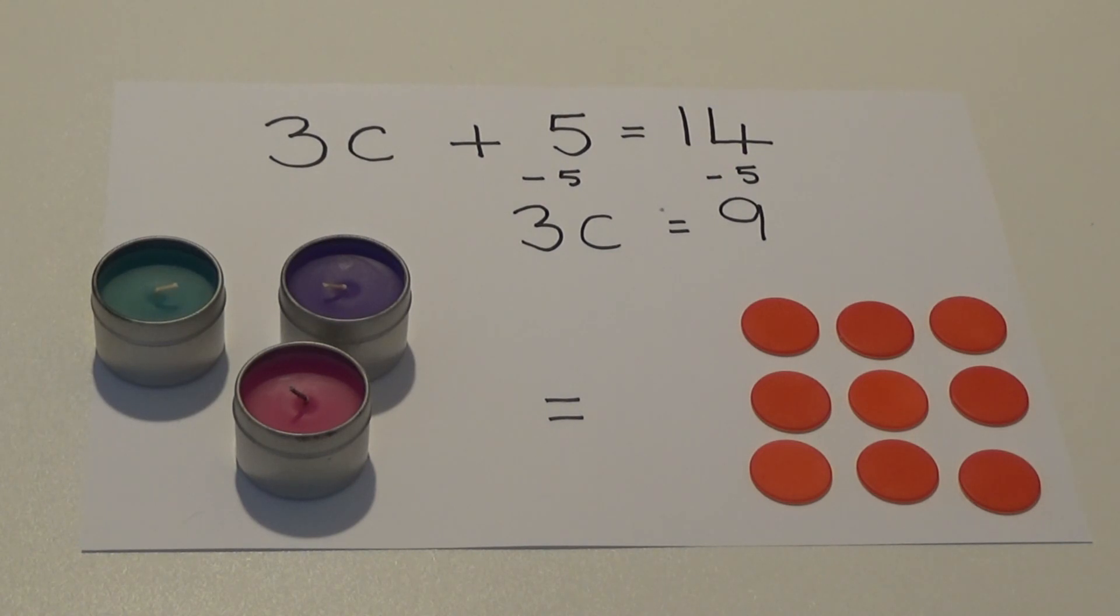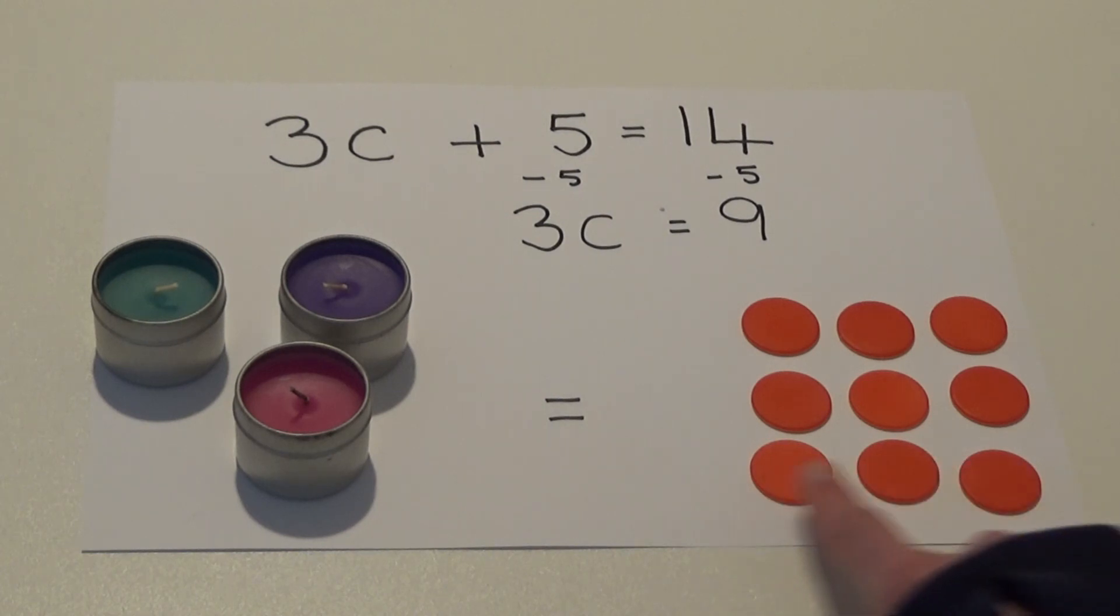The last thing we need to work out is how much 1 candle or C is worth. To work out how much 1 candle is worth, we need to divide 9 by 3. If we divide 9 counters by 3, we end up with 3 counters. This means 1 candle is equal to 3 counters.